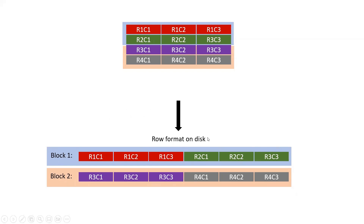When you save it in the row format, each block stores the row information. Entire row one is stored in this block - all three columns of row one are stored in this block. The block is bigger, so we have space, and row two is also stored in this block. Then the third row and fourth row go into the second block, assuming that block one is full and we don't have more space to store more rows there.